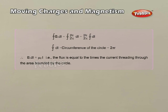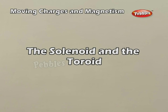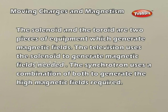The solenoid and the toroid are two pieces of equipment which generate magnetic fields. The television uses the solenoid to generate magnetic fields needed. The synchrotron uses a combination of both to generate the high magnetic fields required.